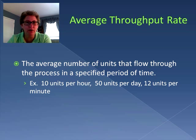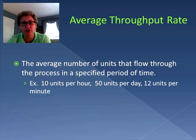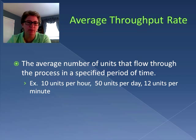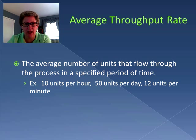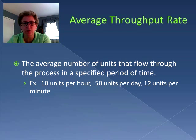When we remember what we've talked about with regard to average throughput rate, we know that it is the average number of units that flow through a process in a specified period of time. For example, it could be 10 units per hour, 15 units per day, 12 units per minute, 100 per week, 100 per hour, 3 per second, and so forth. So we are looking at units per period of time.